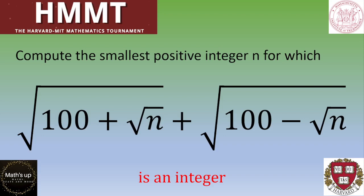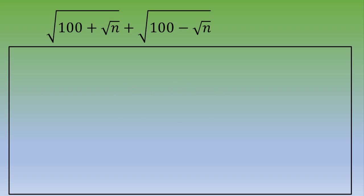Hello and welcome. In this video we solve an exercise from the HMMT — the Harvard-MIT Mathematics Tournament. The problem asks you to compute the smallest positive integer m for which the expression √(100 + √n) + √(100 − √n) is an integer. If you want to give it a try, please pause the video; otherwise, let's see the solution.